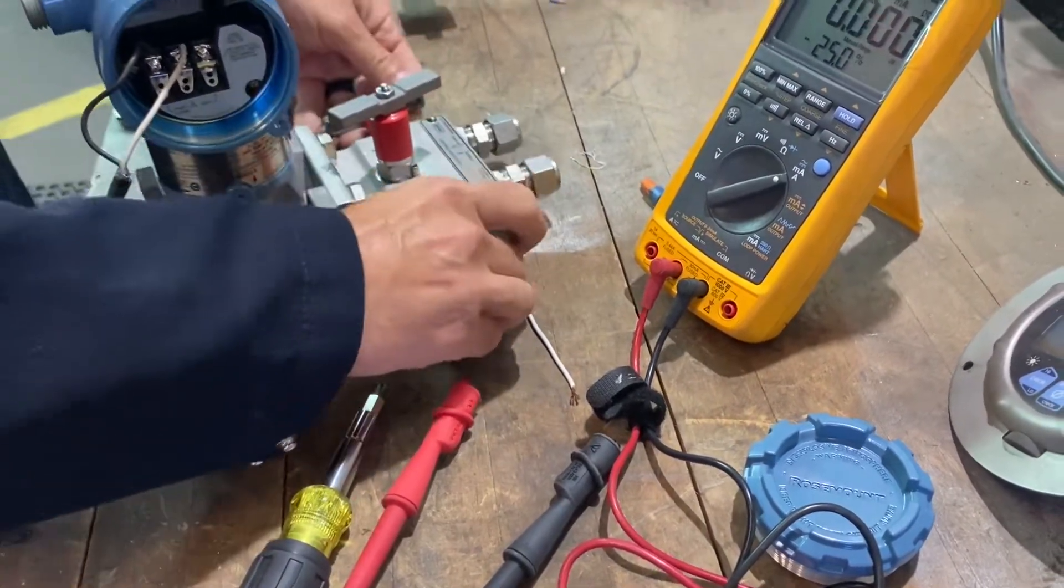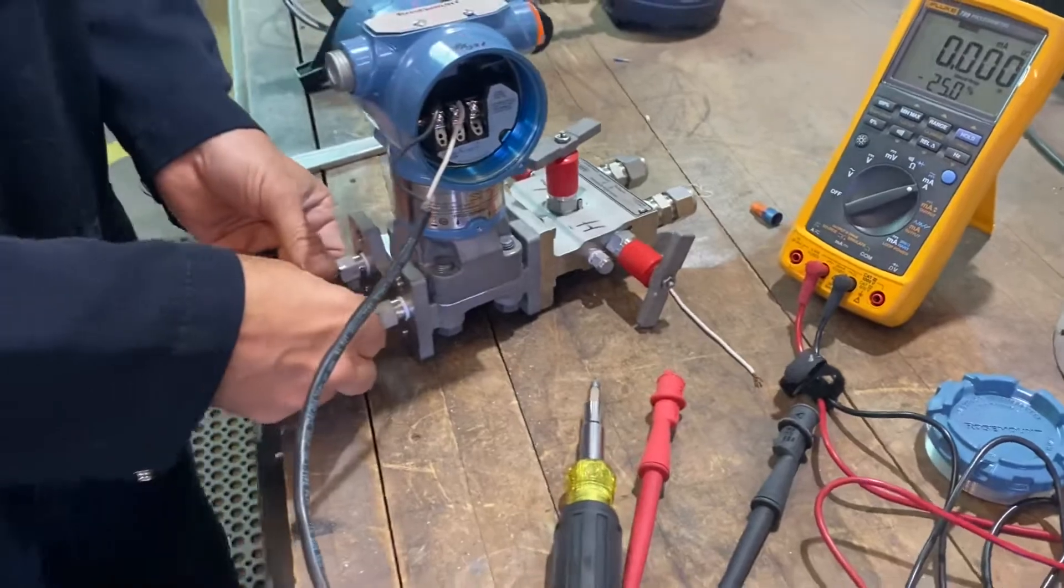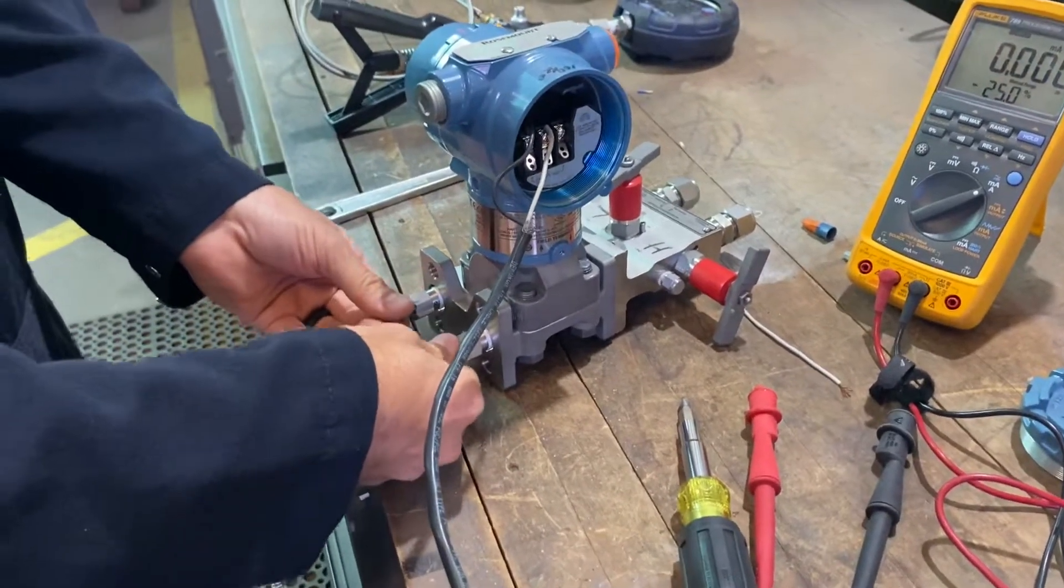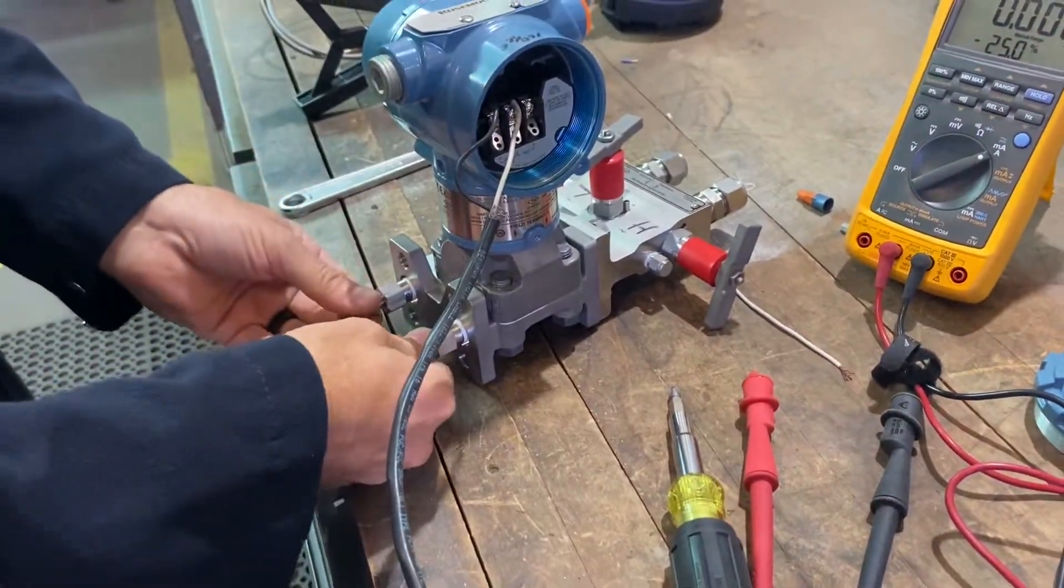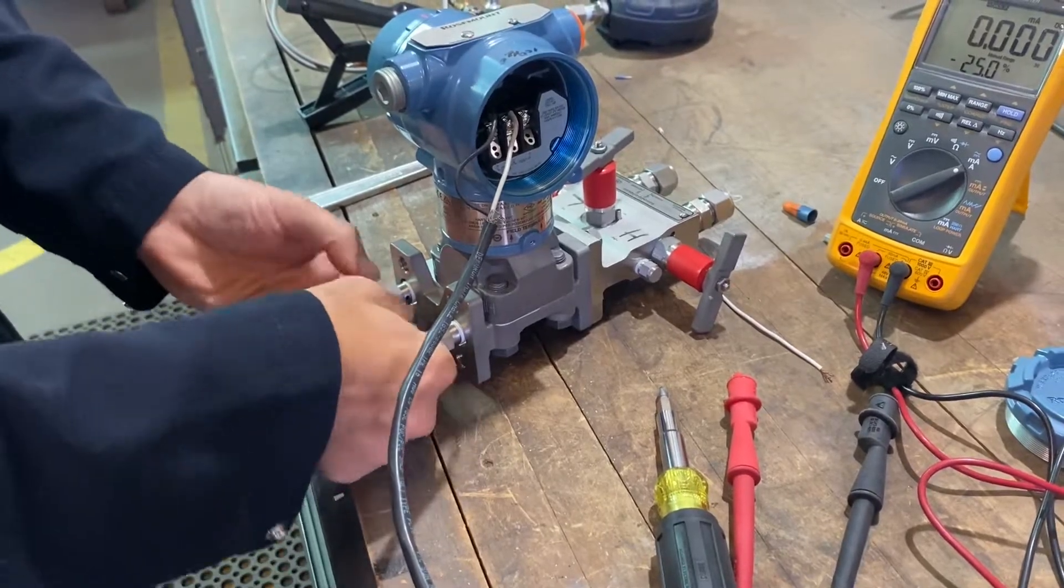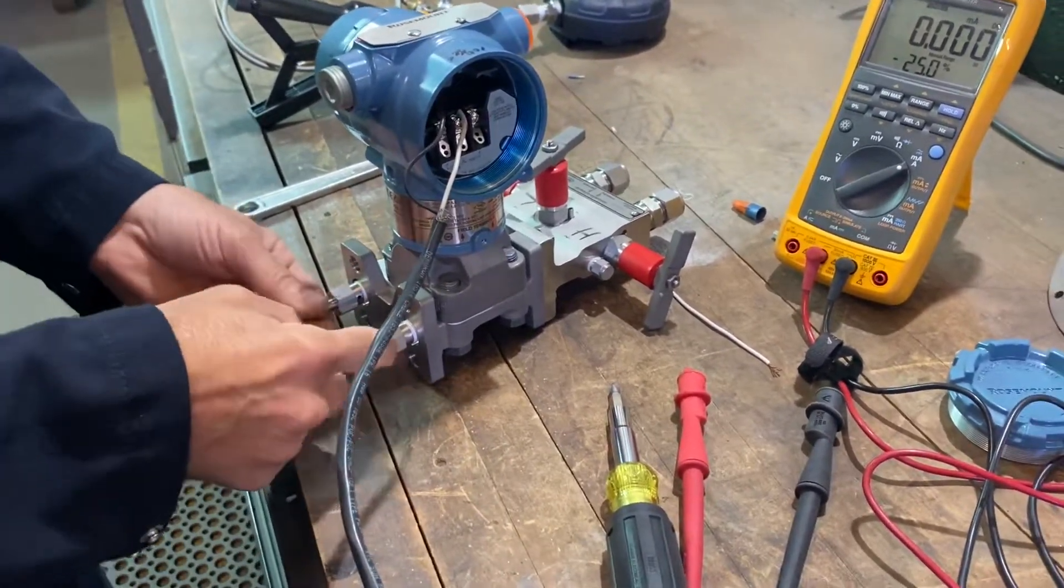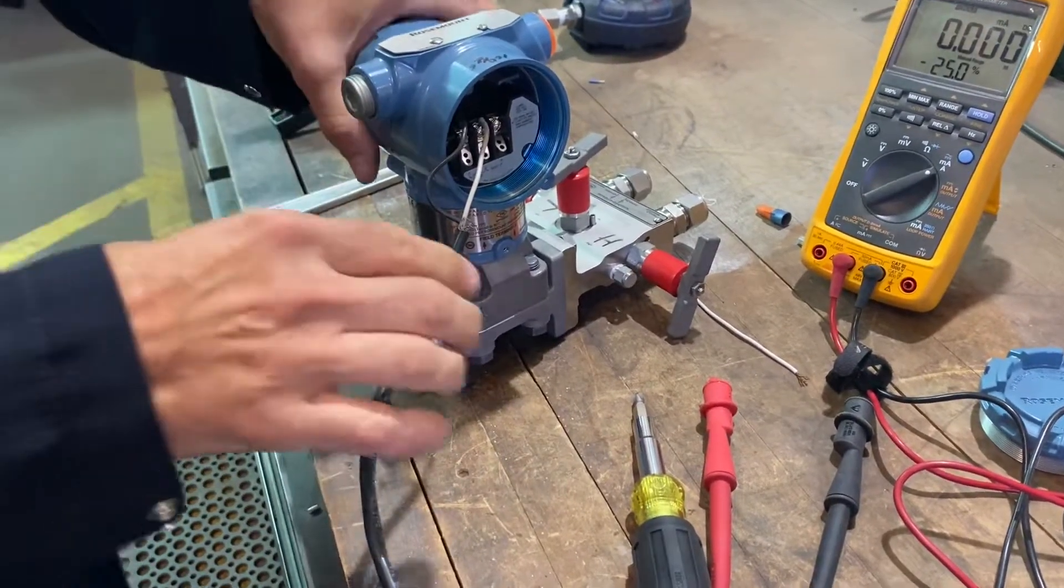Now, the other thing you want to do is you want to check the zero of the meter to make sure it's right. And the way to do that is, you block the meter completely in. After you block the meter in, you take the bleeders out, or at least loosen them, and then you should have zero.